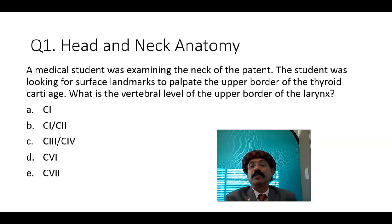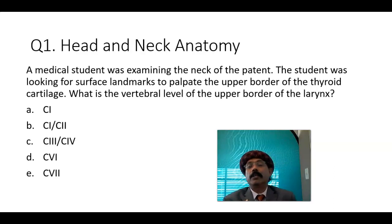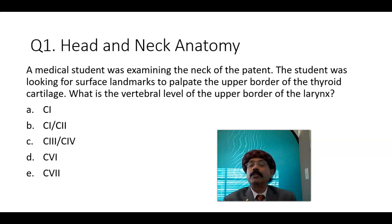First question: a medical student was examining the neck of a patient. The student was looking for the surface landmarks to palpate the upper border of the thyroid cartilage. What is the vertebral level of the upper border of the larynx? Choices: cervical vertebra 1, cervical vertebra 1 and 2, cervical vertebra between 3 and 4, cervical vertebra 6, cervical vertebra 7.